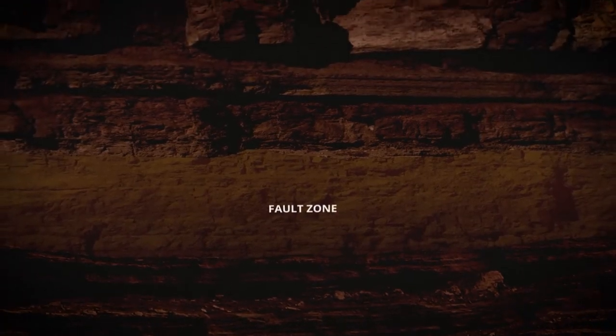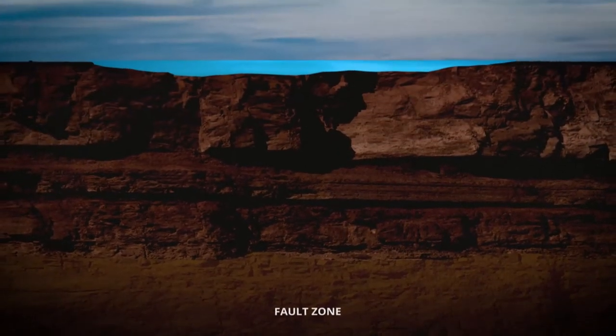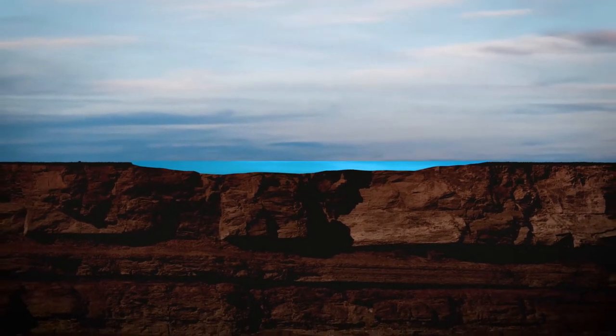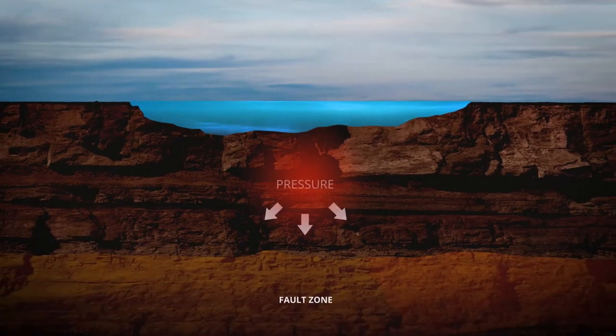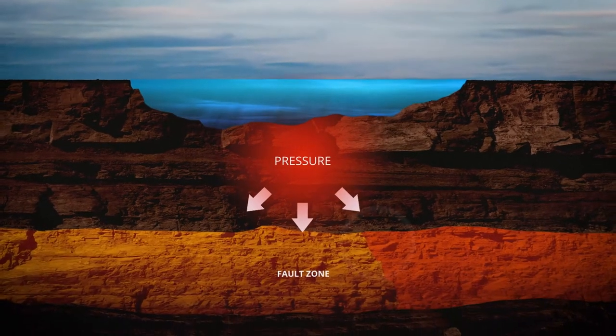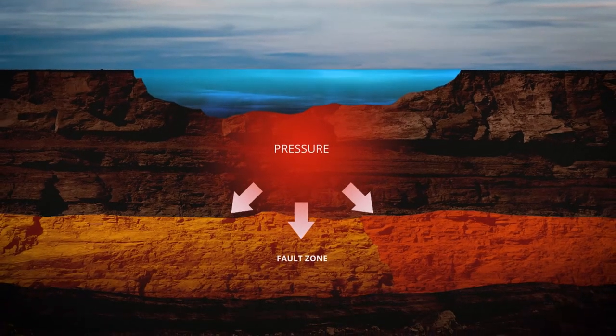Induced seismicity occurs when we perturb the natural system. Induced seismicity is seismic activity that can be related to a human cause. So you already have a fault. That fault is going to produce an earthquake at some time in the future — maybe not for hundreds of years, maybe not for thousands of years. But if you change the pressure of the fluid that's in the little cracks and pores in the rock, you make it easier for the earthquake to occur. In a sense, you're advancing the clock.